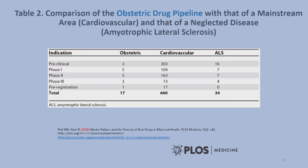A 2008 paper on the obstetric drug pipeline showed that there were vanishingly few new drugs being developed for obstetric indications. The paper compared the pipeline for obstetric conditions, cardiovascular conditions, and amyotrophic lateral sclerosis. Despite 4 million births per year, there are only 17 new drugs being developed for obstetric indications, compared to 660 for cardiovascular indications and 34 for ALS.